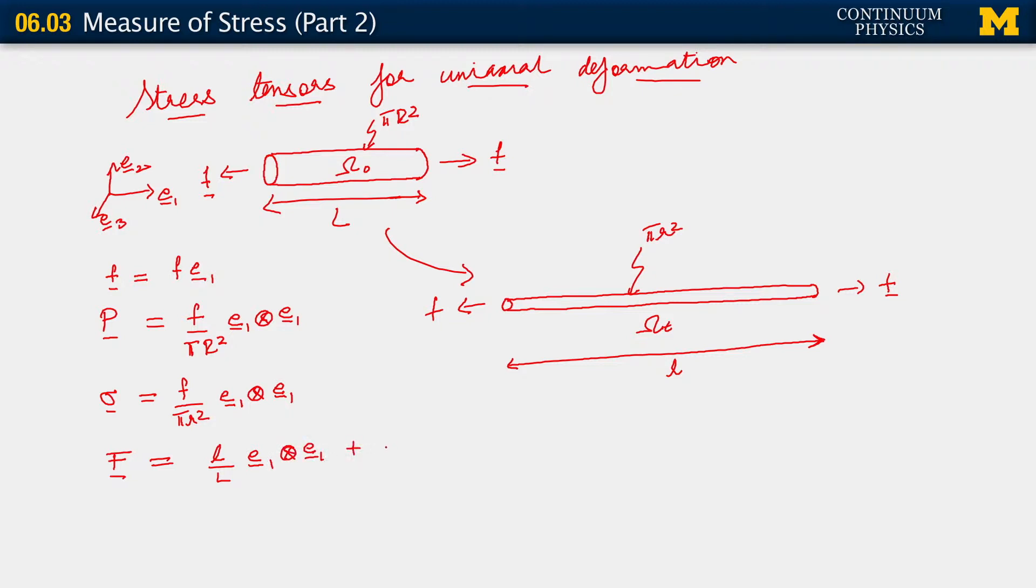Plus, along the other two directions, we have little r over capital R, E2 tensor E2, plus E3 tensor E3. Now, of course, we noted that there was a relation. If this thing is incompressible, does it have to be incompressible? Well, it doesn't have to be. If we make it incompressible, we need to introduce some other conditions there. So let's not assume that it's incompressible. It is compressible.